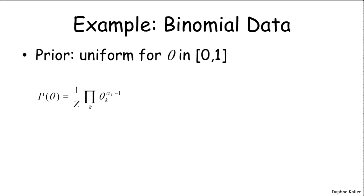So let's look at an example of the influence that this might have. So let's go back to binomial data or Bernoulli random variable. And let's take the simplest example where a prior is uniform for theta in zero one. And we've previously seen that that corresponds to Dirichlet with hyperparameters one one.